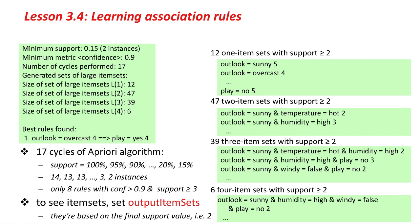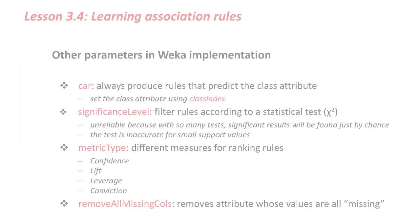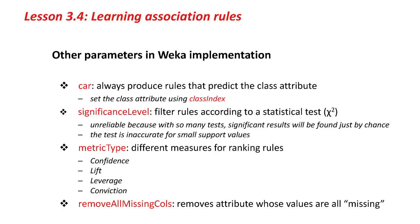For each item set, it converts it into rules and looks for rules with greater than the minimum confidence, ending up with the 10 rules we saw before. There are some other parameters in the Weka implementation. The CAR (class attribute) option always produces rules that predict the class attribute. You can filter rules according to a chi-squared statistical test, but that's actually unreliable because we're making a very large number of statistical tests and significant results will be found just by chance.